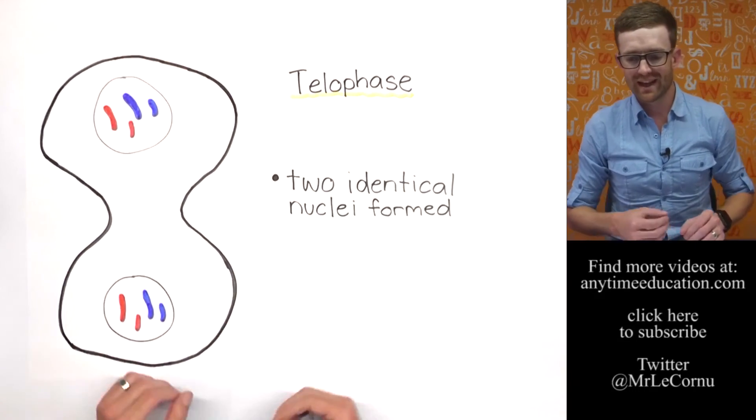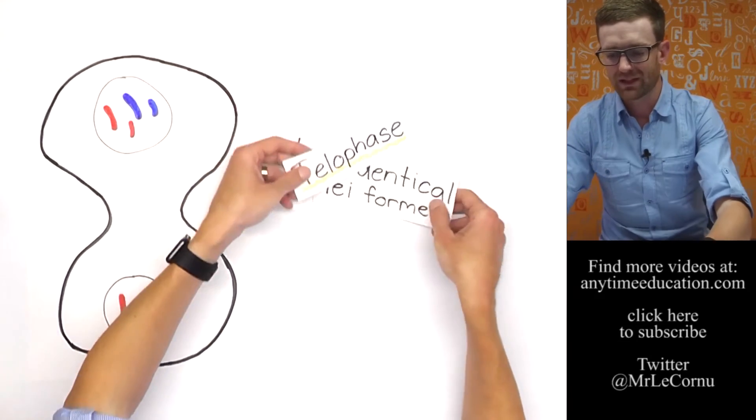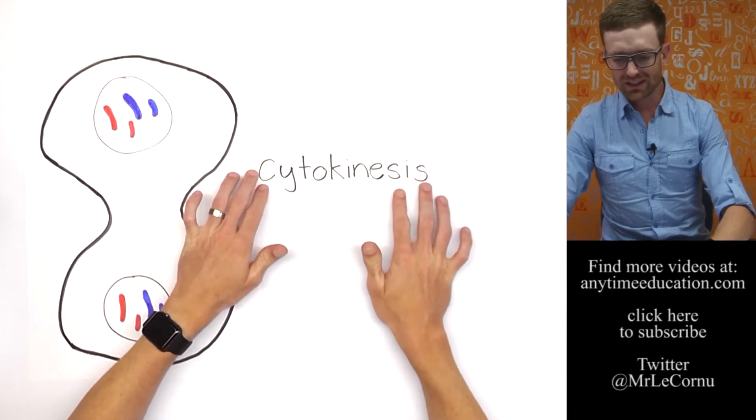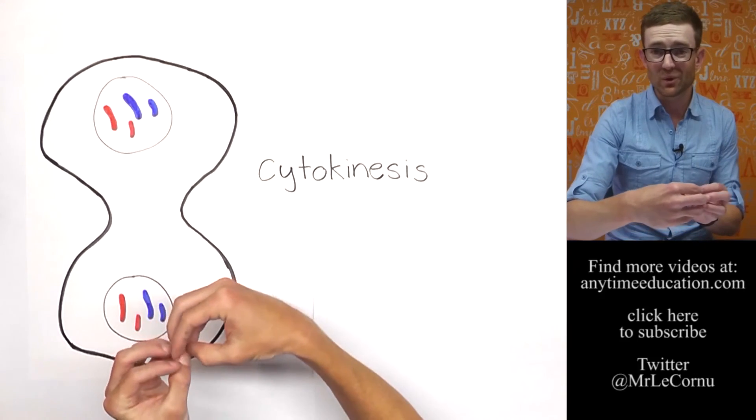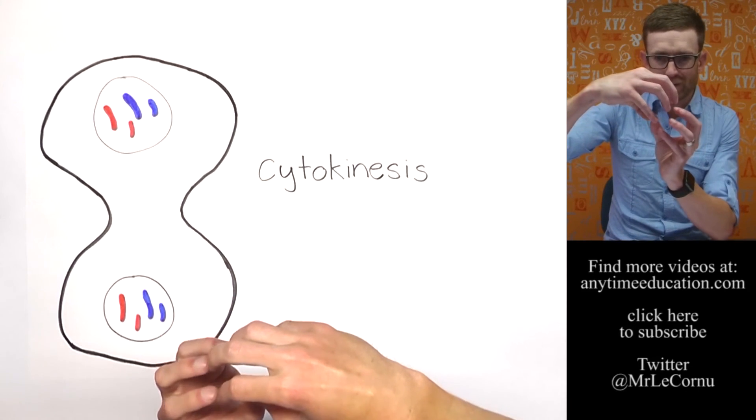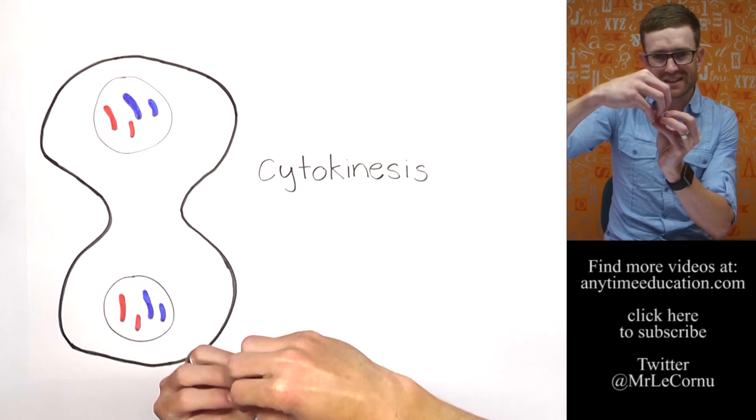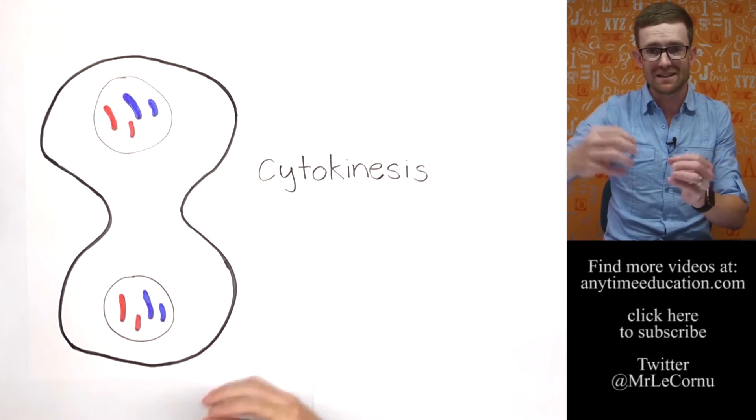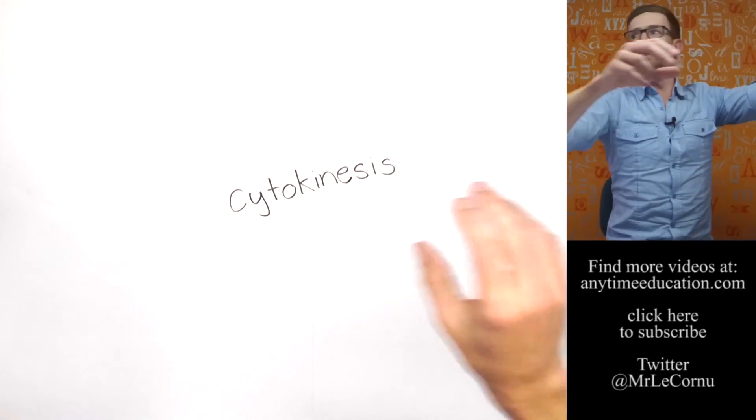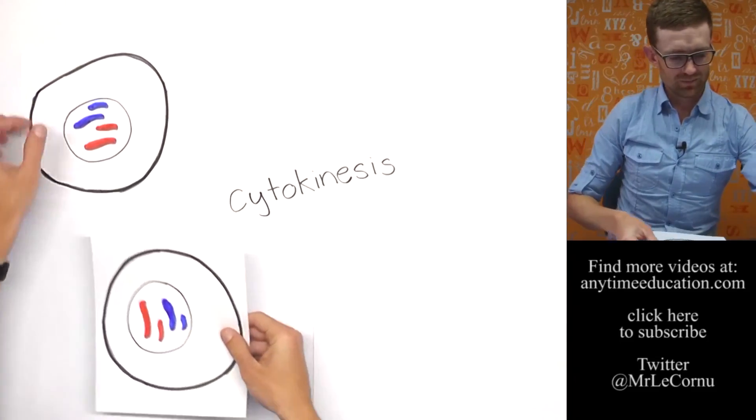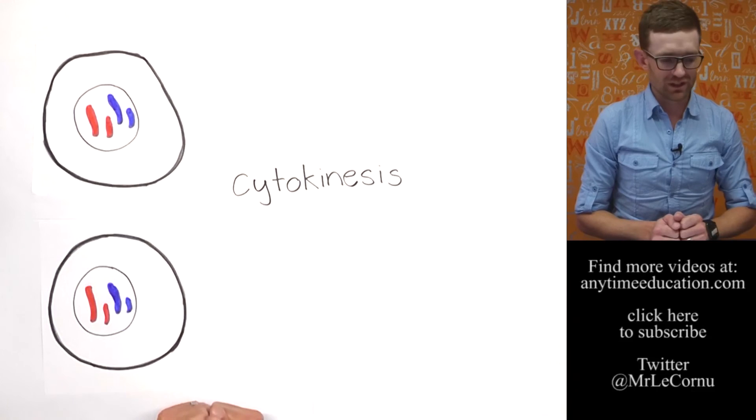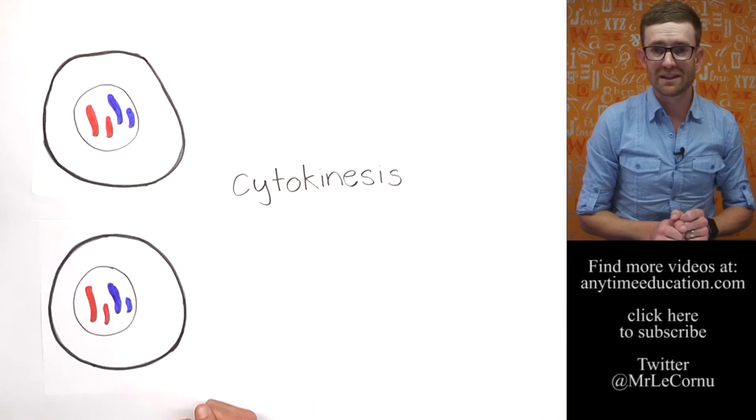And then the final part that's going to happen actually happens straight after telophase, and that is called cytokinesis. Cytokinesis is really the bit where the cell splits into two. You can see it's actually started to happen here. What happens is the cell membrane folds in on itself and then cleaves itself into two. It's amazing how it actually happens. So it's starting to happen. Once cytokinesis has occurred, of course, we're going to end up with two new cells.